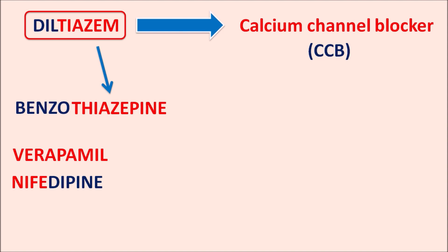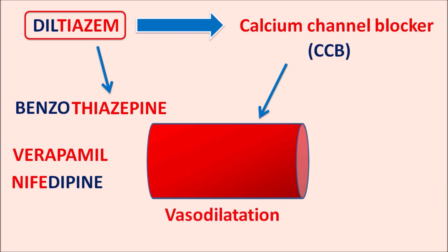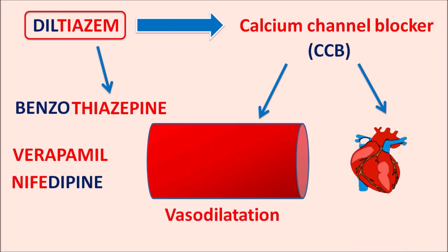Verapamil selectively acts on the cardiac muscle. Dihydropyridines mainly act on the vascular smooth muscle. Whereas Diltiazem acts on both cardiac as well as vascular smooth muscle — this can be observed with the prefix 'di', which indicates it acts on both cardiac and vascular smooth muscle.